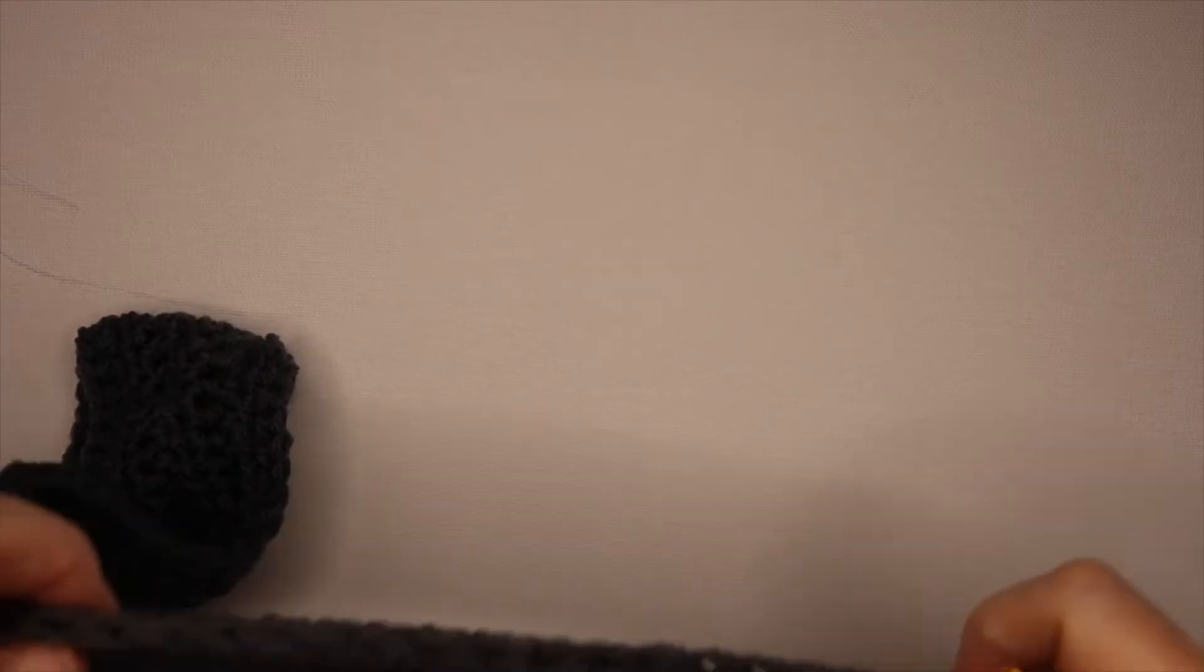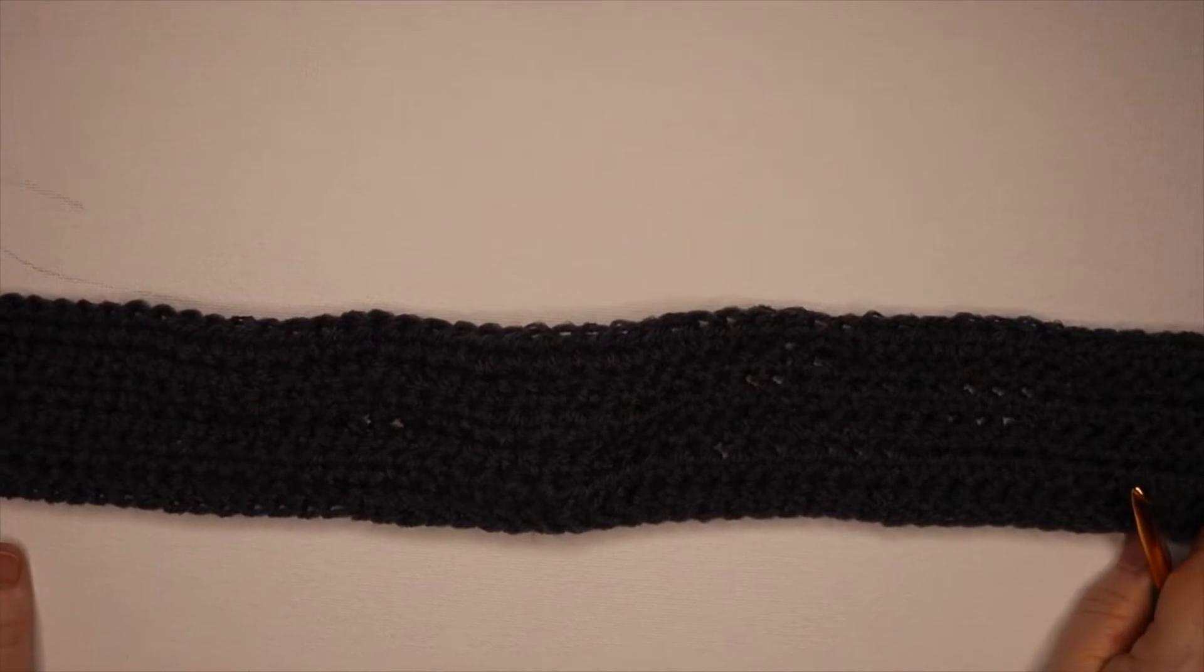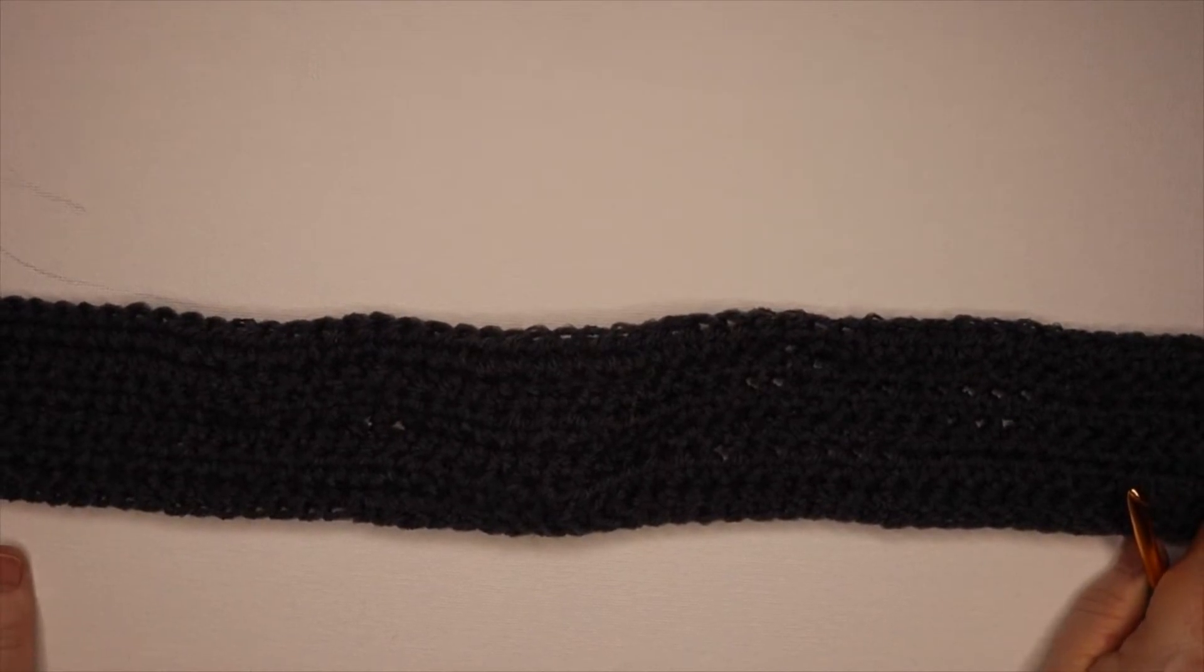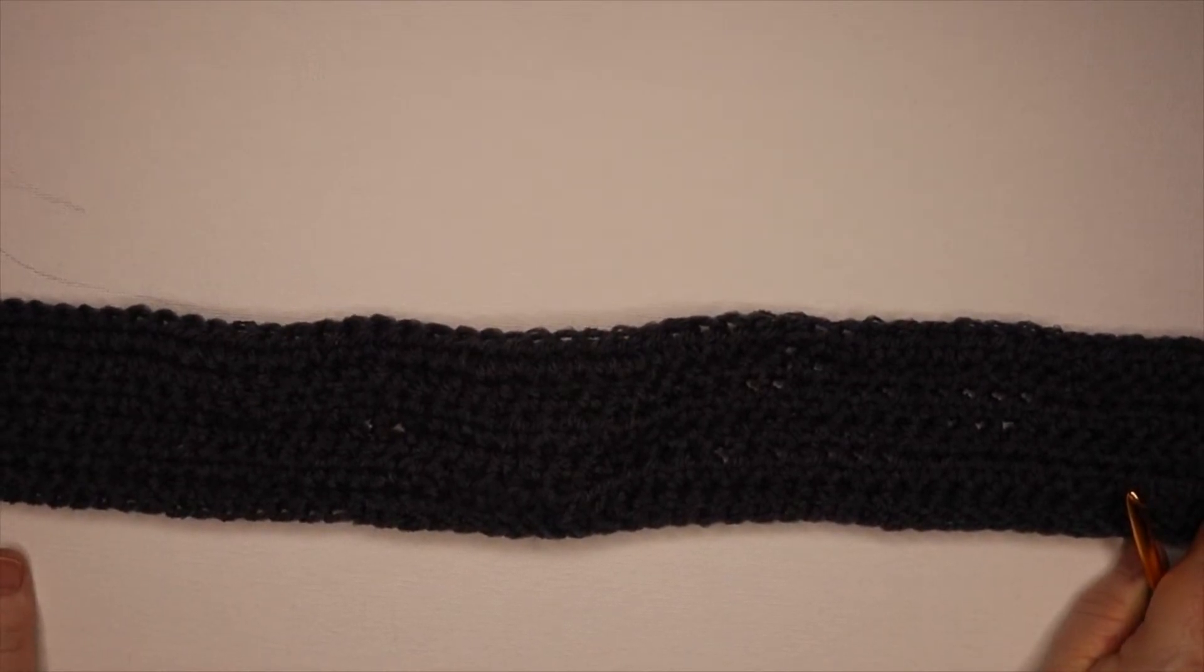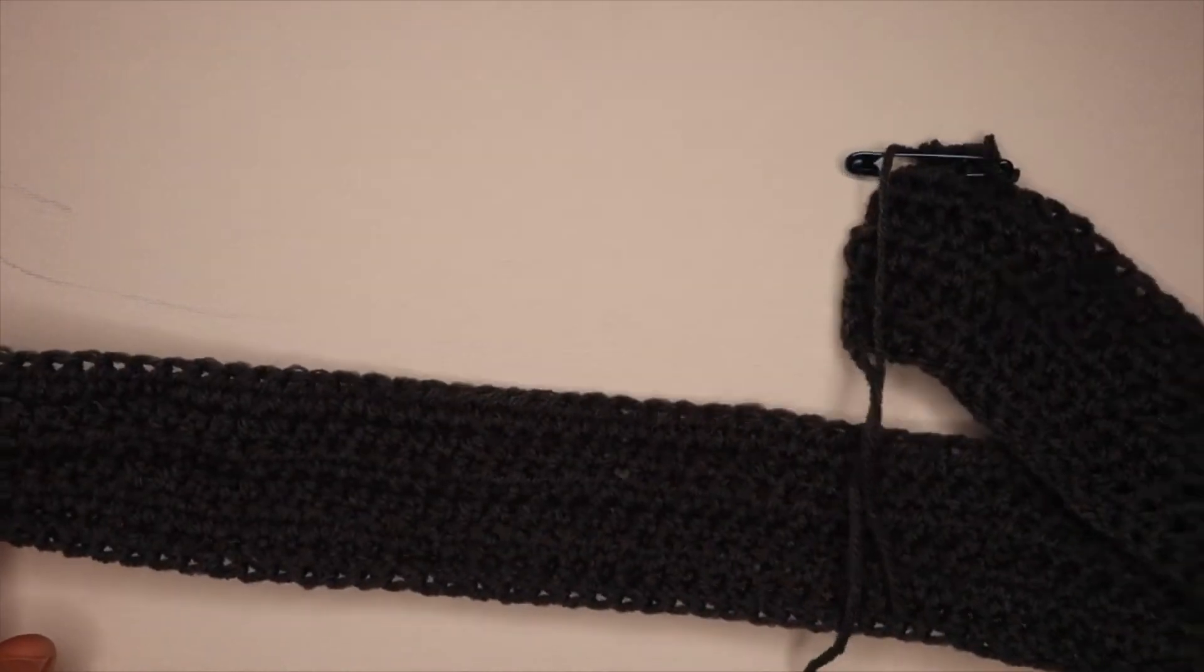Alright, we're ready to get back to this and I wanted to show you what I had so far. I did wind up chaining, doing 81 chains, and then I worked my half double crochets for that. And that's a good size little lap can that will run over the arms of a wheelchair.